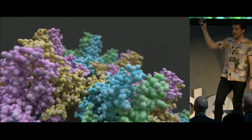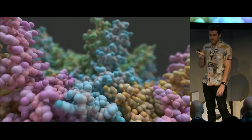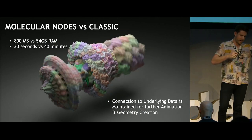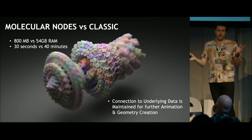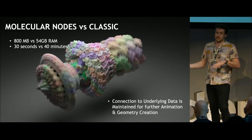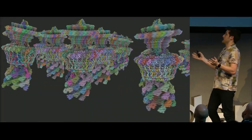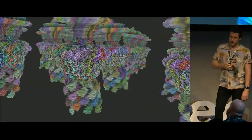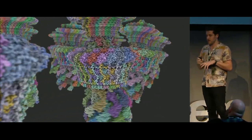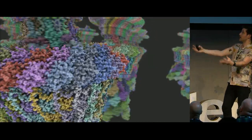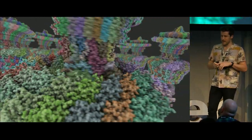A massive shout out to Johnny Matthews for the accumulate field node — this is basically hundreds of accumulate field nodes all running back to back. Let's go back to our flagella motor. We can import this now via geometry nodes instead of via the classic export. We're dealing with only 800 megs worth of RAM versus gigabytes and gigabytes, and it does it in 30 seconds instead of 40 minutes. Importantly, you maintain your connection to the underlying data so you can create more and more animations. You can do ridiculous things like this — in this scene we have around 50 million atoms, all being animated on the fly by geometry nodes. You can see your massive structure all moving, but you can get close and zoom in and see each individual amino acid going about its day.